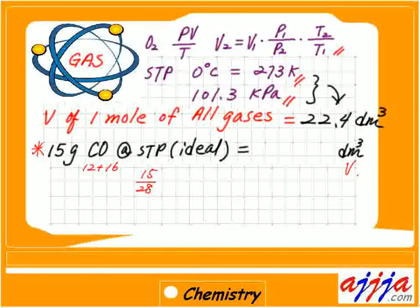That's why 15 times, 15 grams, divided by actually 28. But actually the bottom one, so 28 grams per mole. We are looking for 15 grams, so how many moles? That's it, so mole right there.